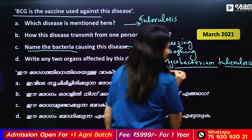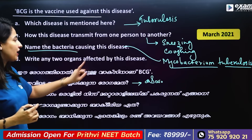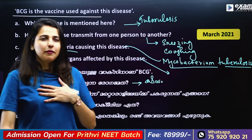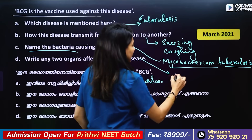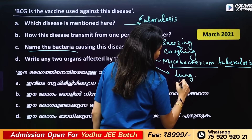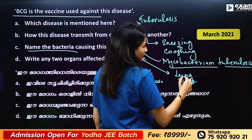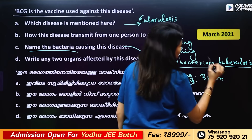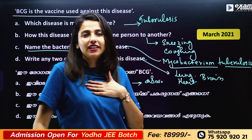Name the bacteria causing this disease — it is Mycobacterium tuberculosis. Any two organs affected by this disease: the main one is the lungs, and also the heart.